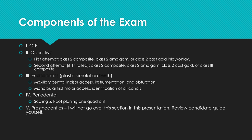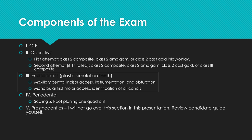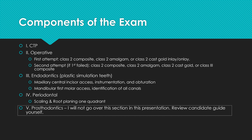The exam has five key components. The CTP, which you should have already taken. Operative, where your first attempt is a class 2 composite, amalgam, or cast gold inlay or onlay; if you fail, you can retake with a class 2 composite, amalgam, cast gold, or a class 3 composite. Endo is on plastic teeth — a maxillary central incisor you access, instrument, and obturate, and a mandibular first molar you only access and identify canals. Perio is one quadrant of scaling and root planing. Pros is not covered here — review the candidate guide if interested.